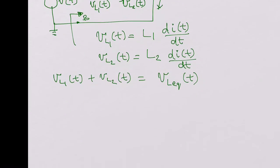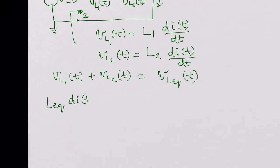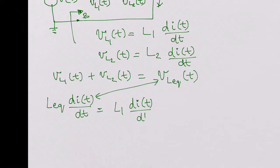So now we can write L equivalent dI of t over dt, which is basically this one. That would be equal to VL1 of t, which is L1 dI of t over dt, plus L2 dI of t over dt.